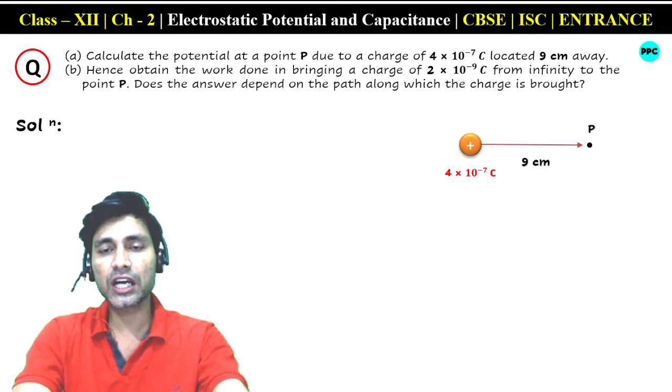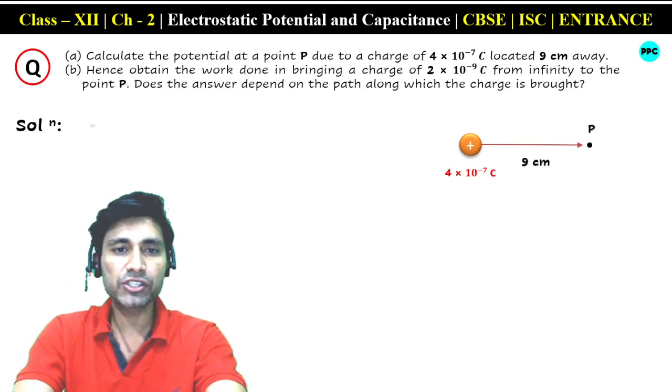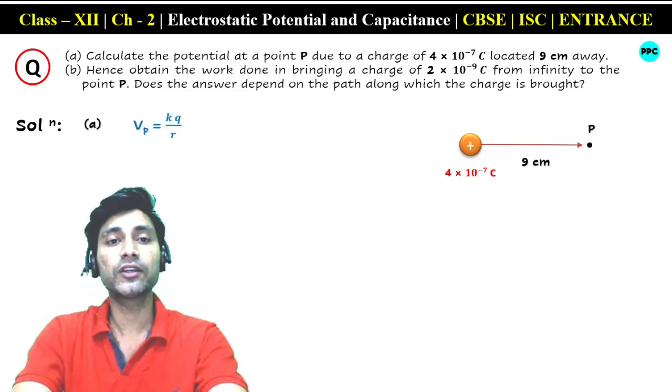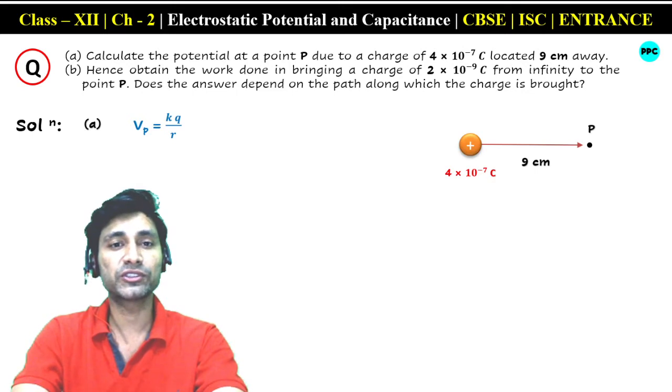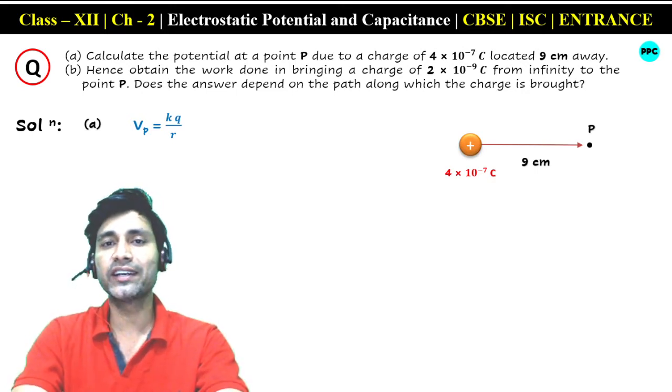At point P, at distance r from the charge, the potential formula is V = kq/r, where k is the electrostatic force constant with value 9 × 10⁹.